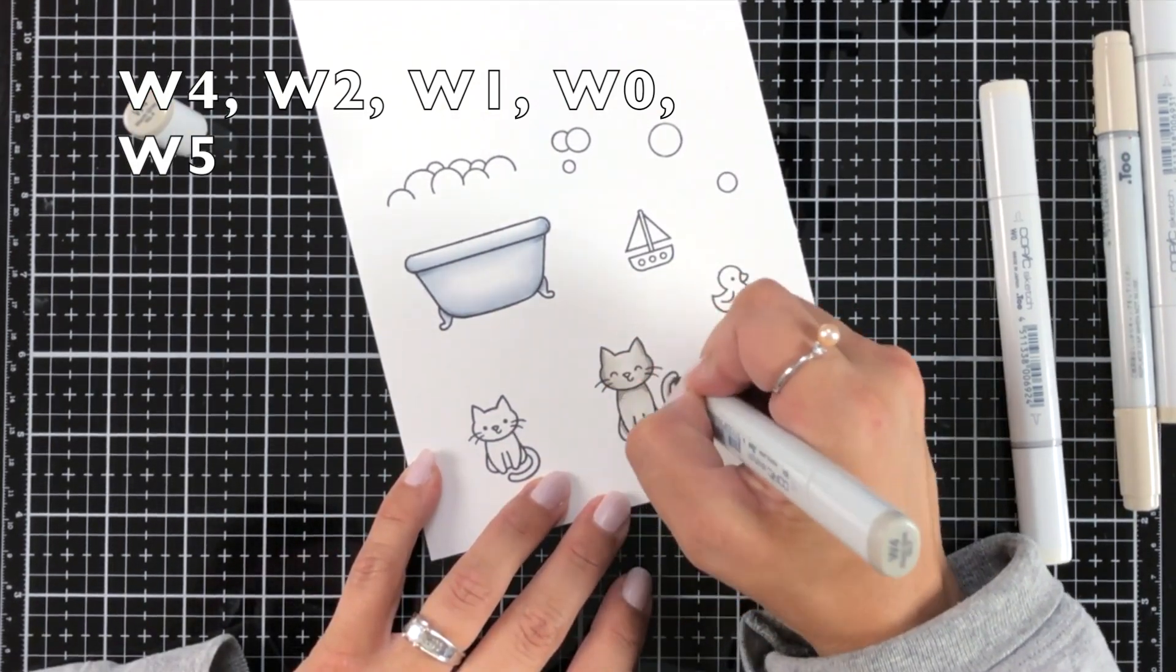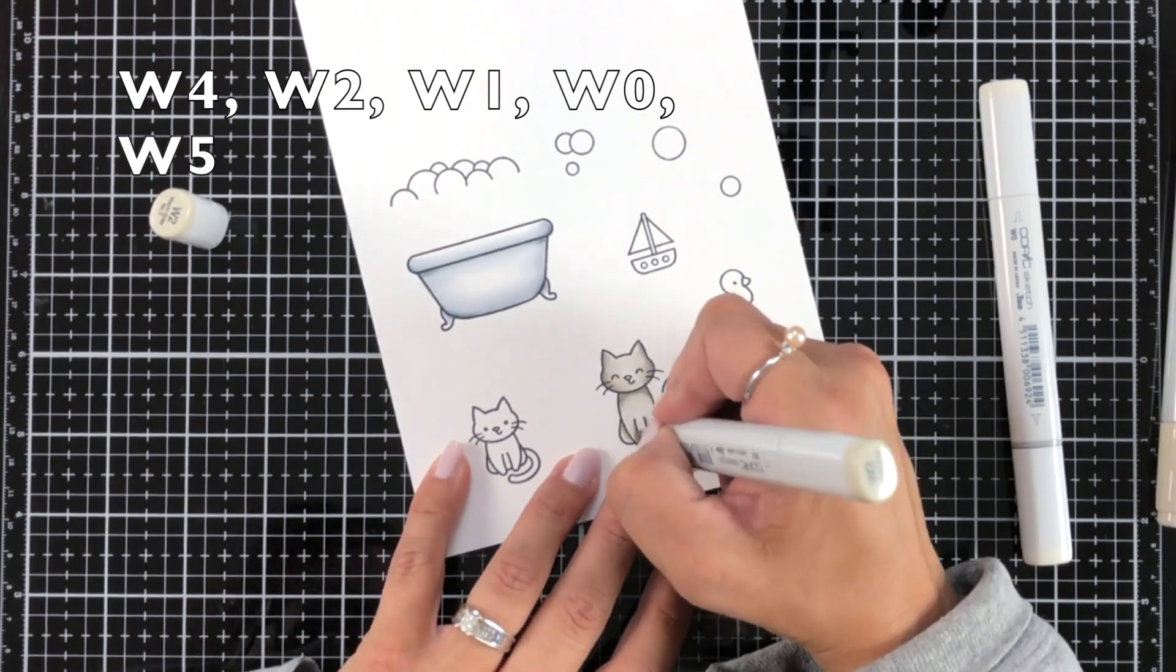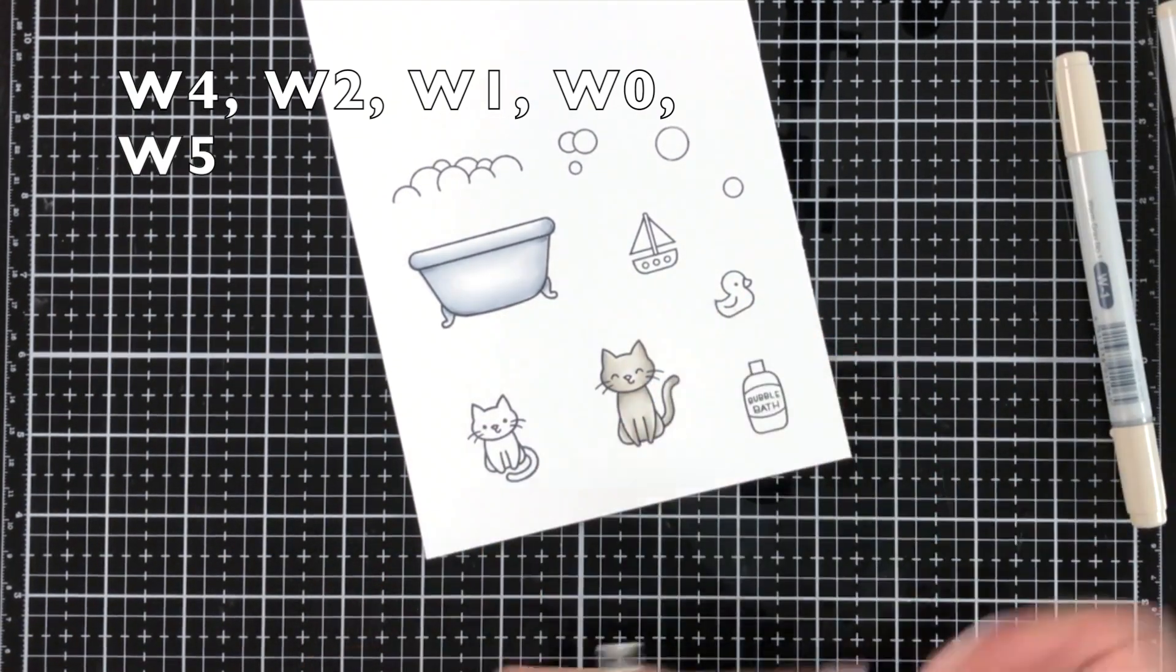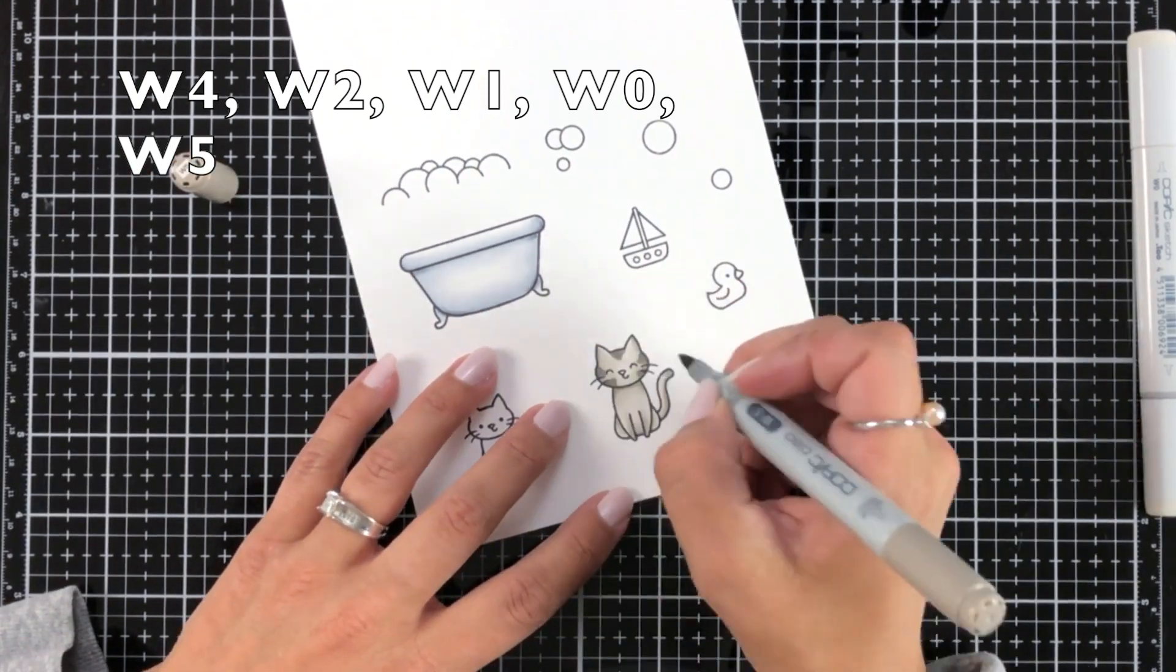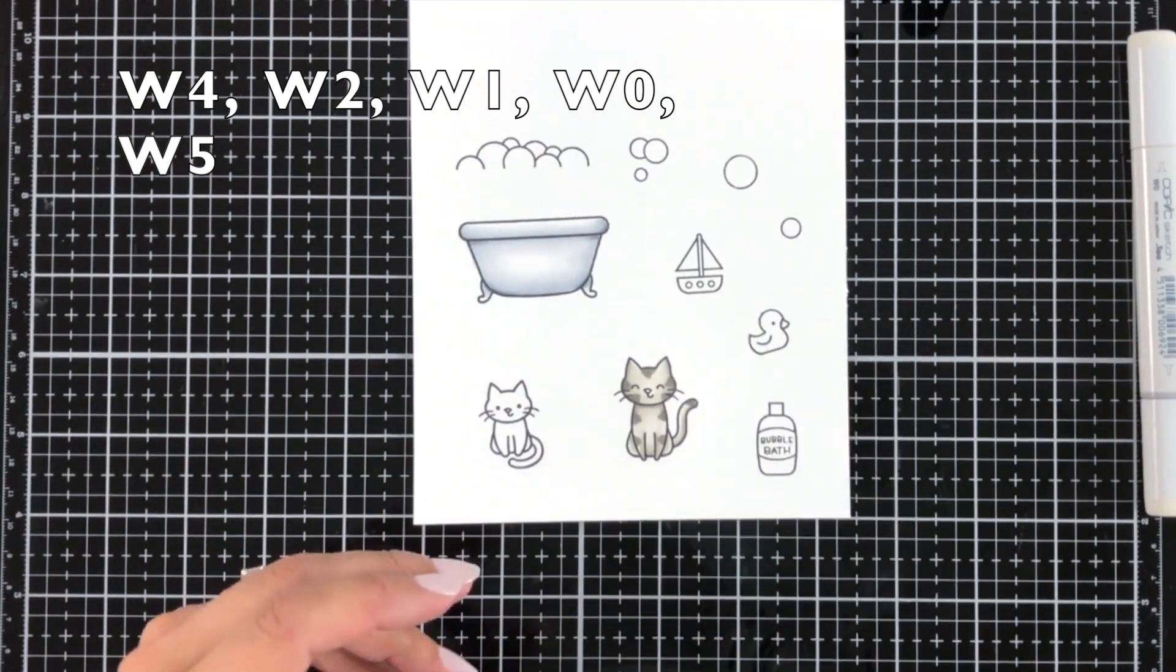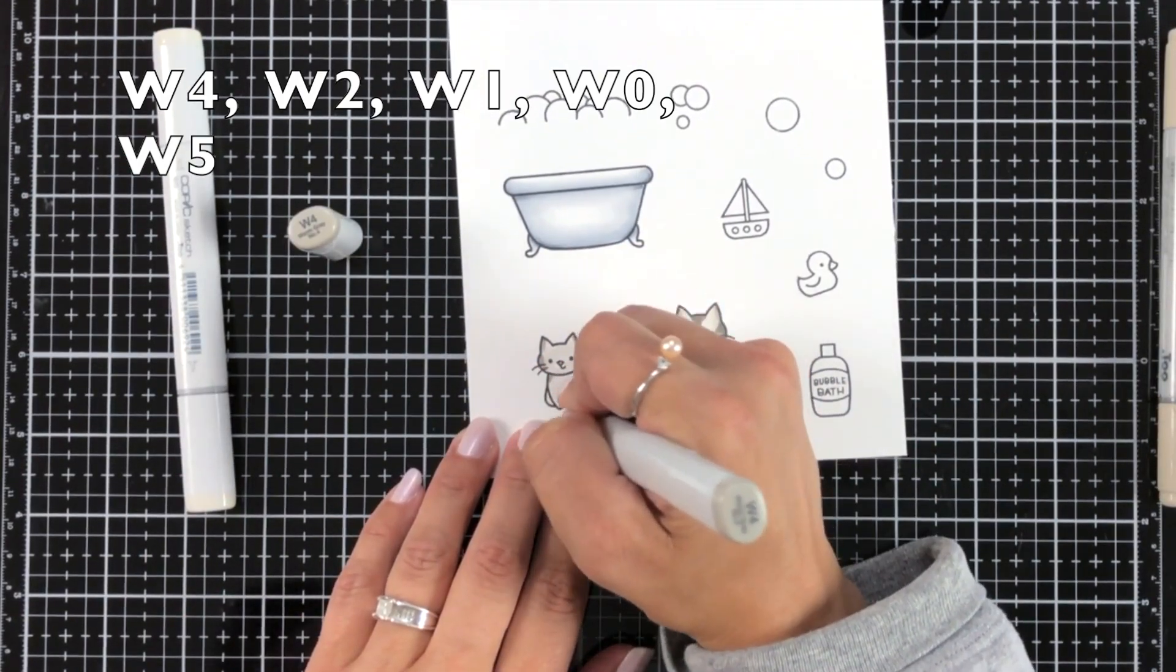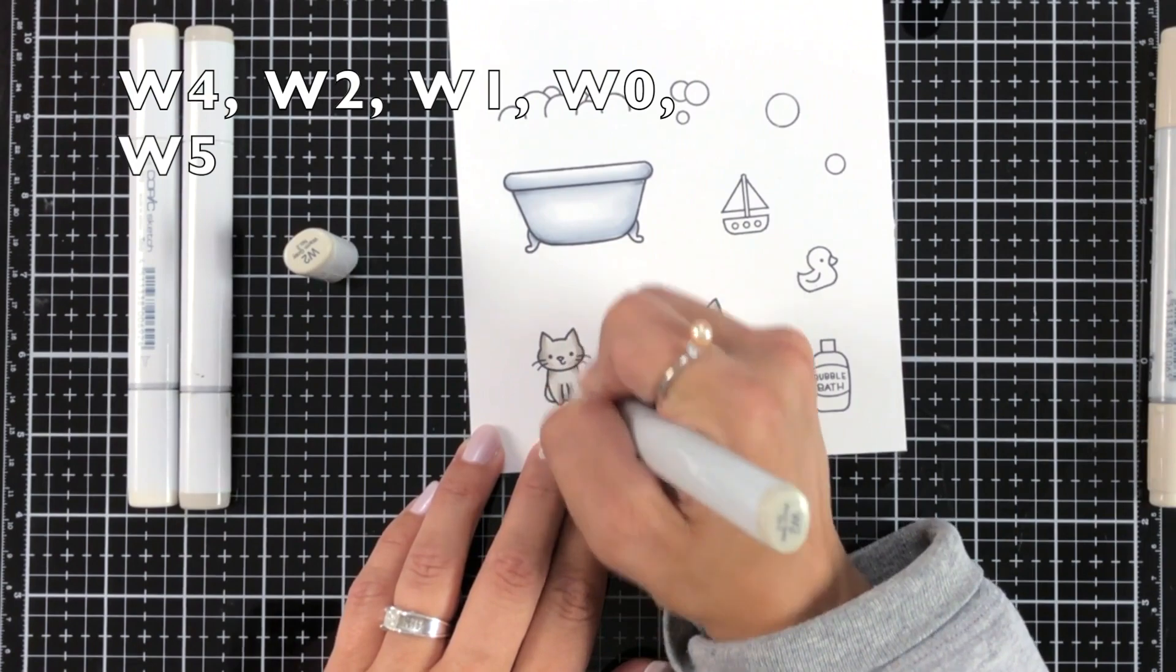For the two kitties I went with some warm grays. I did W2, W1, and W0. I brought in W4 for just a little bit of a shadow and then I added stripes to my kitties with the W5.